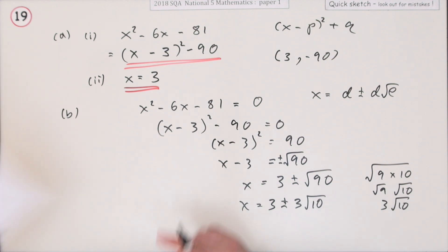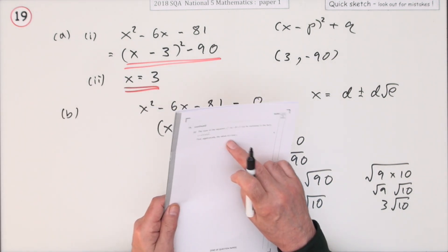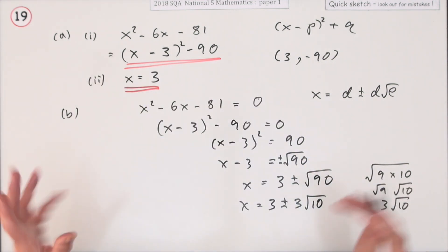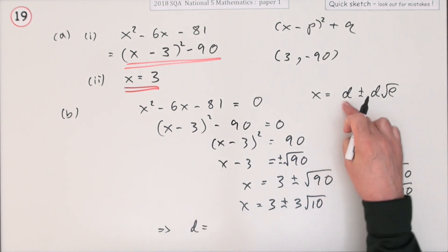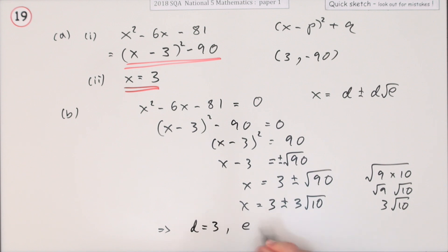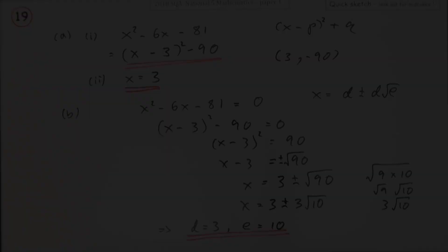However it did say find algebraically the values of d and e. So don't lose out on a possible mark at the end just by leaving it like this. So now we'll say well that means that d must be these 3's here and e must be that 10.